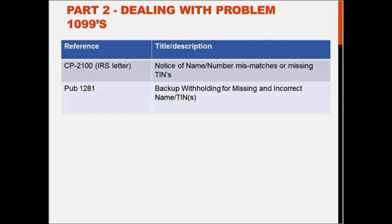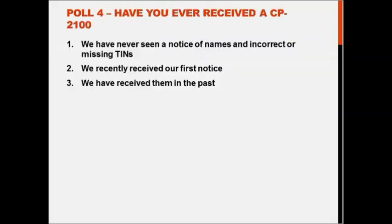Moving to part two: if you're not using the TIN matching system, you are more likely to receive a CP 2100 letter. The publication number for this topic is pub 1281, which is designed to help you understand the problems you'll face when you have a missing or bad tax ID number. You will receive a letter from the IRS numbered CP 2100 or CP 2100A for smaller taxpayers. These notices tell you that you have a deadline and specific steps you must perform — it's a bit complicated.